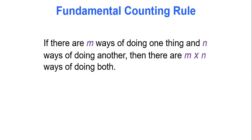So that's where counting comes into play. The first counting rule is the fundamental counting rule, and it says that if there are m ways of doing one thing and n ways of doing another, then there are m times n ways of doing both.